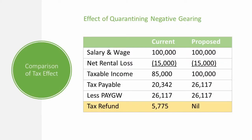Looking at the slide — effective negative gearing versus quarantined negative gearing — on the left is the current treatment, on the right is the proposed. The net rental loss on the right-hand side is the one that is quarantined. So you're paying tax on $100,000 salary and wage income. The net result, as you can see, is the loss of the tax refund. That $5,700 is pretty much gone out of your pocket under the negative gearing change. Very simple example.